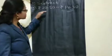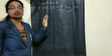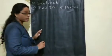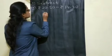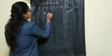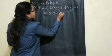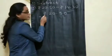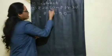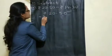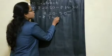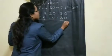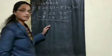Children, if the problem is given in the horizontal way, you have to arrange it in the vertical form. That is rupees 20.50 minus rupees 14.30. So minus sign — now we are doing subtraction.